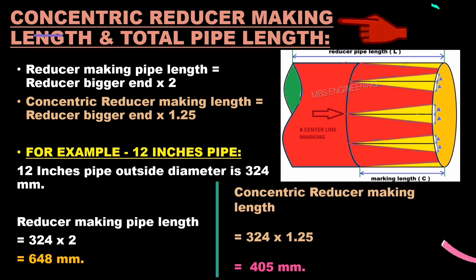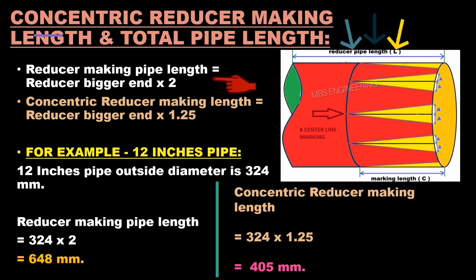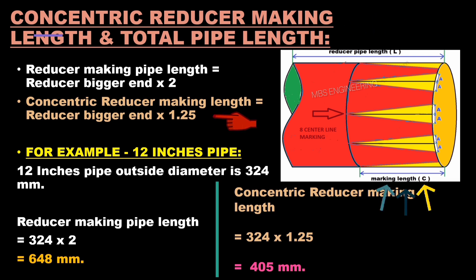We will learn how to calculate the concentric reducer marking length and total pipe length. The formula for concentric reducer making pipe length is the concentric reducer bigger end multiplied by 2. The formula for concentric reducer making length is the concentric reducer bigger end multiplied by 1.25.